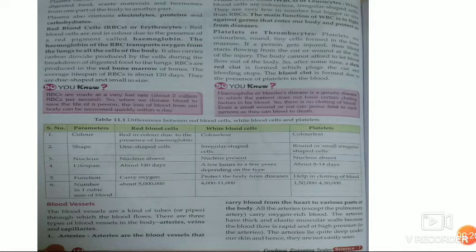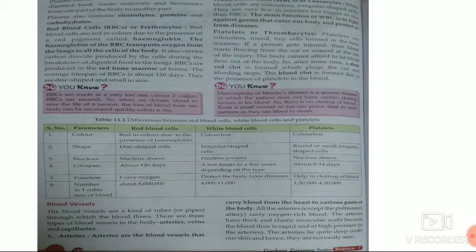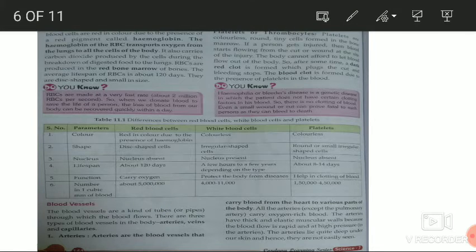There are three types of blood vessels: arteries, veins and capillaries. Arteries are the blood vessels which carry pure blood or oxygenated blood from the heart to various parts of our body. All the arteries except pulmonary artery carry oxygenated blood or oxygen-rich blood.